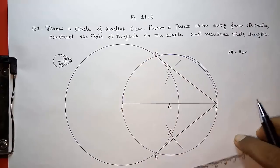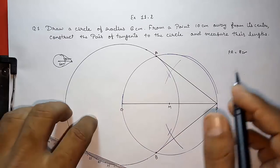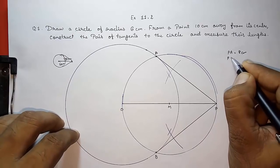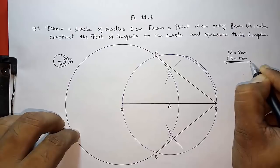And we know PB will be also eight centimeters. As we know from exterior point, the distance of both the tangents will be equal. So both distances will be eight centimeters.